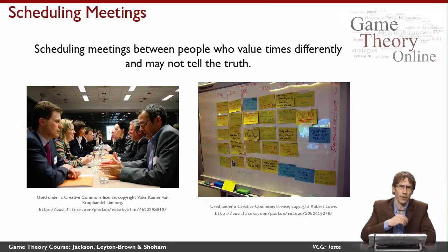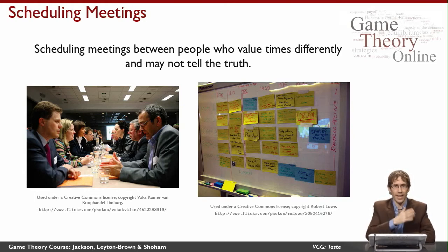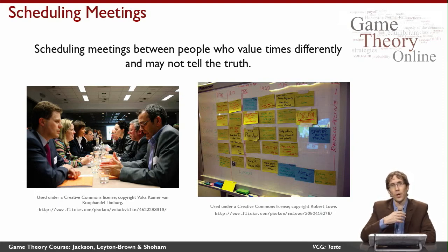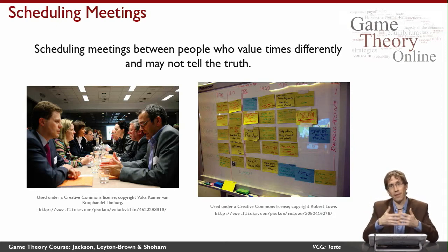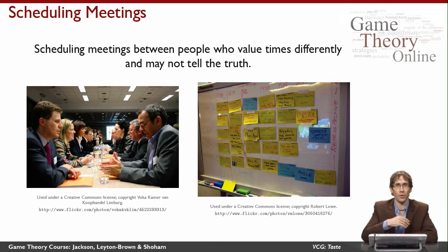Here's a third example, pretty different from the first two — it's more like the bridge example in that I need to make a social choice rather than allocating one thing among different people. The problem is scheduling meetings. Imagine you need to schedule meetings between people who have different values for different times in their calendar and who may not tell you the truth about whether they're available. For example, they may lie and say they're busy first thing in the morning just because they don't want to come in then, but that might turn out to be the only time everybody else is available. It may be better to reward that person strongly for coming in at that time rather than not having the meeting at all.